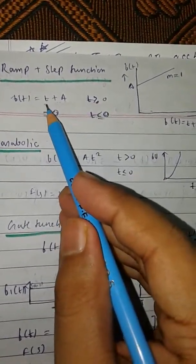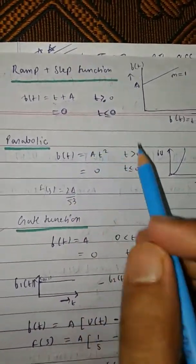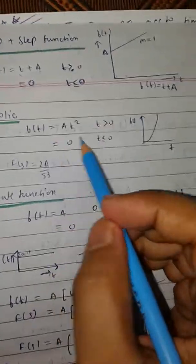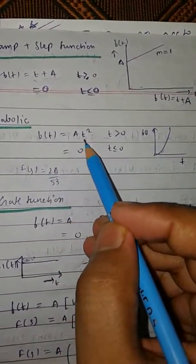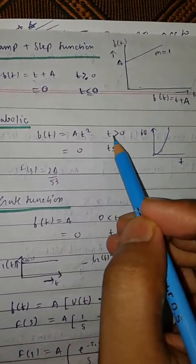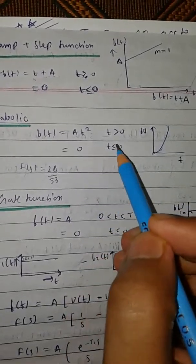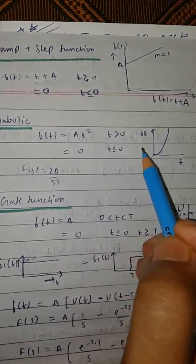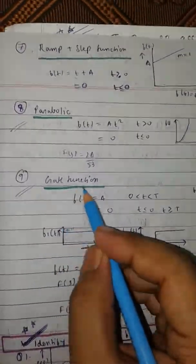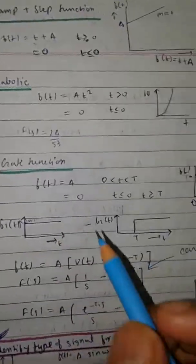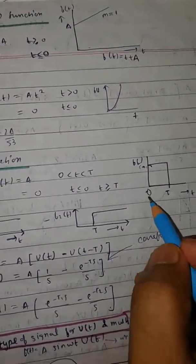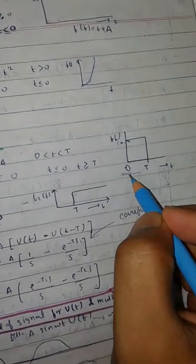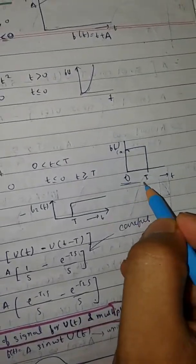Now we have the ramp plus step function. As you can see, it follows the equation t plus A. For t greater than 0 it is t plus A, and for remaining values it is 0. Here we also have the parabolic function: f(t) equals at squared for t greater than 0, and it is 0 for t less than or equal to 0.